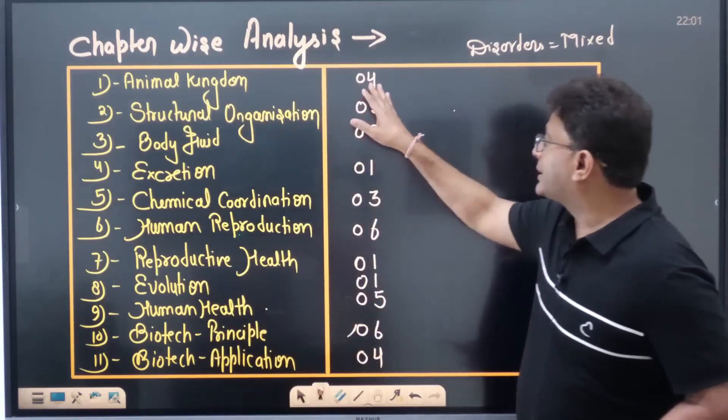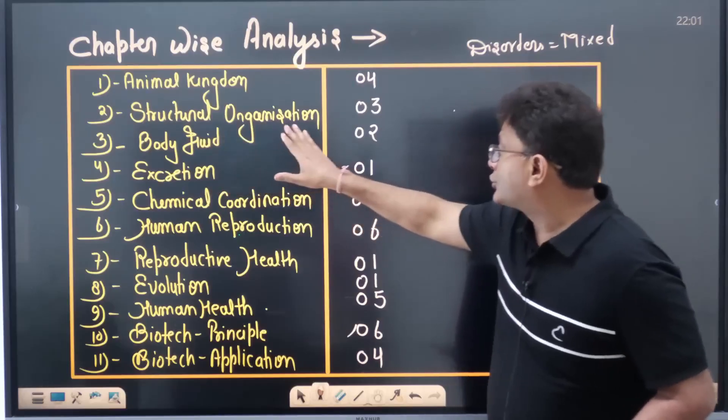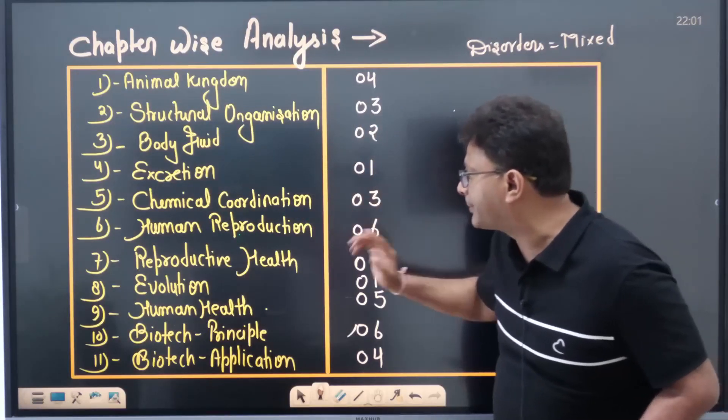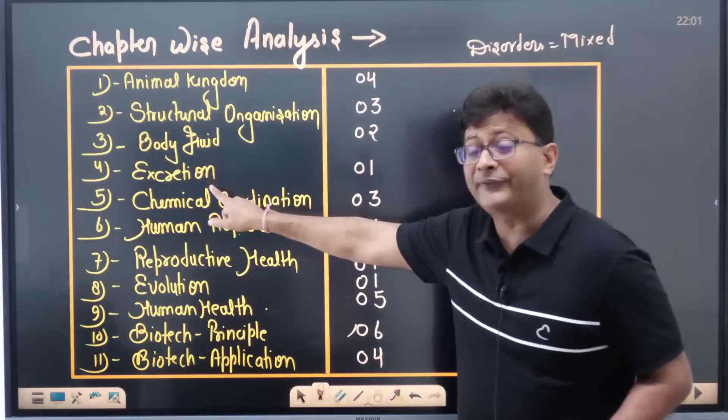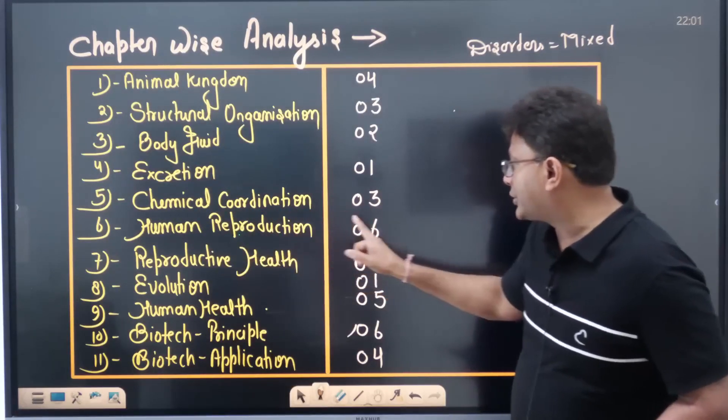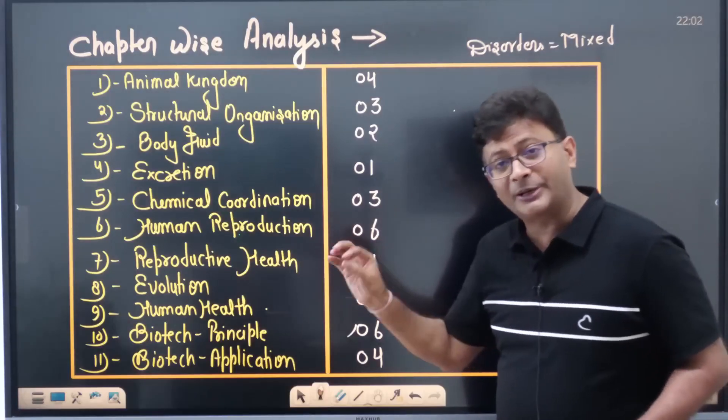So I am telling you quickly: this time four questions have come from the animal kingdom, three have come from structural organization, two have come from body fluid. You have seen one after the other, there was a proper diagram in it, a diagram of nephron.